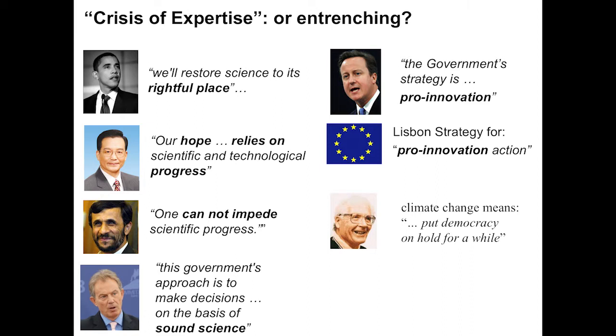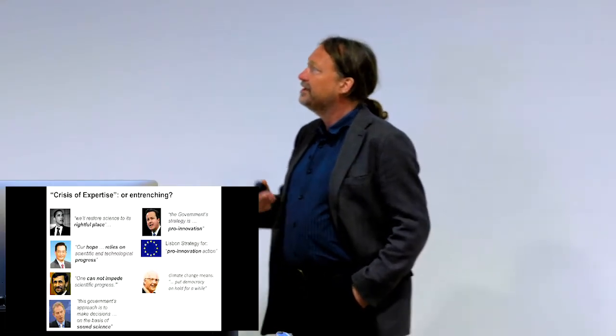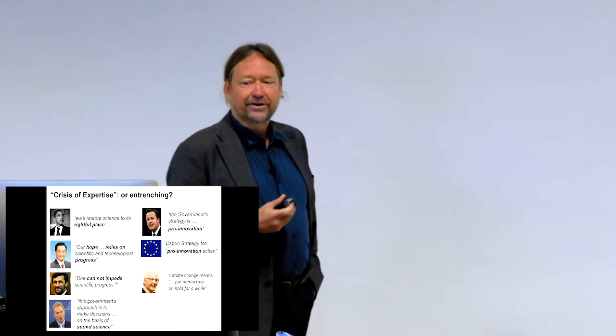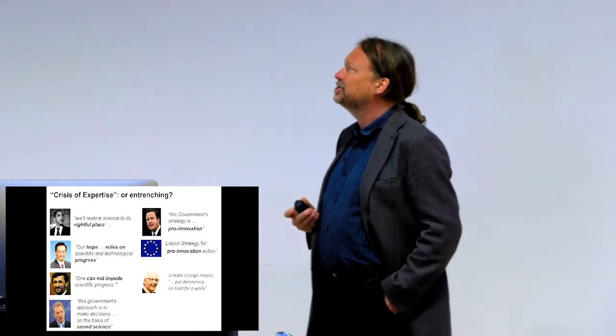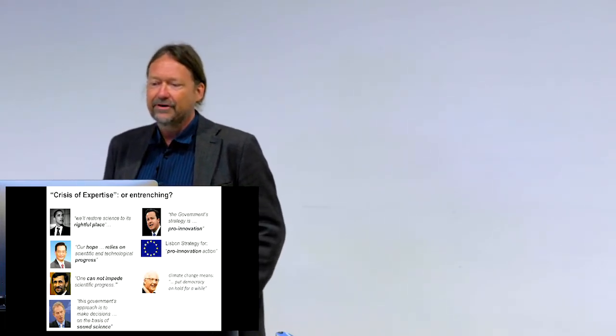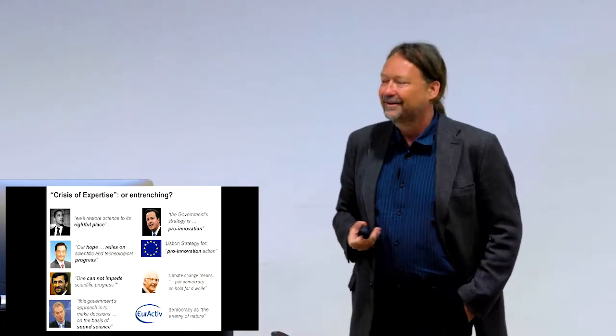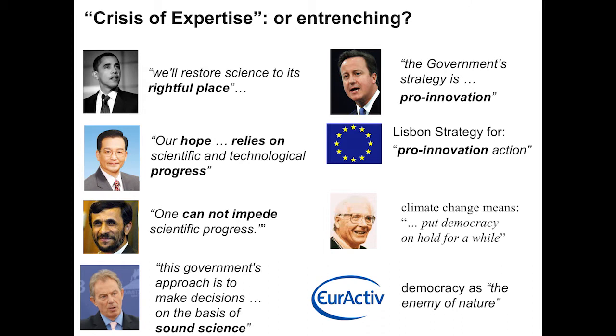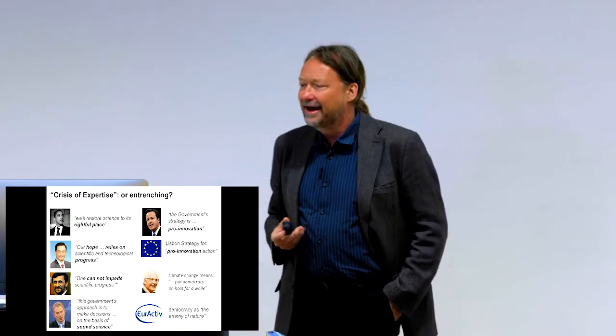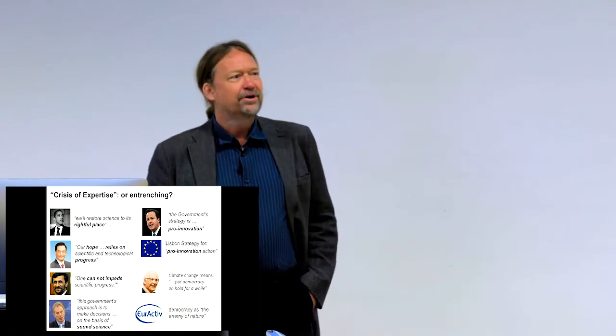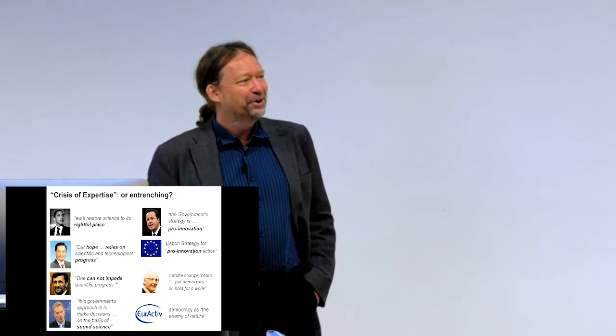If you think that example was a little bit over-colorful, there's no shortage of instances where this is made absolutely explicit. James Lovelock talking about the crisis in climate change recognition and respect for climate change expertise, meaning that actually we should put democracy on hold for a while. And the main European Commission official news website had a piece asking the question whether now democracy is the enemy of nature. That's a pretty good contender for a crisis of expertise as well, but of the opposite kind.